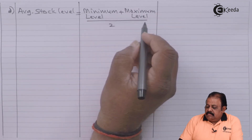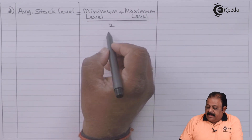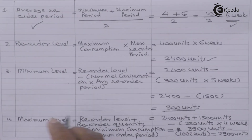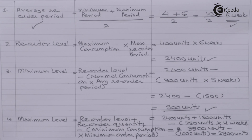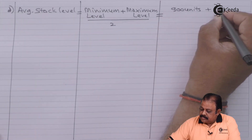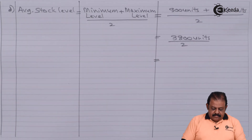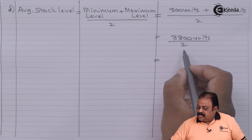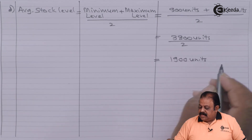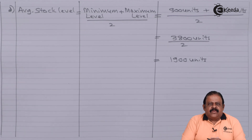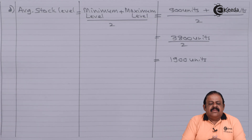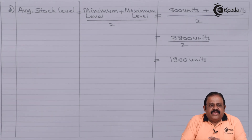Finally, average stock level equals minimum level plus maximum level divided by two. Minimum level is 900 units and maximum level is 2900 units — that is 3800 units divided by 2 — giving 1900 units. Thus we have calculated reorder level, minimum level, maximum level, and average stock level. Thanks for watching this video; stay in tune with Ikida and subscribe to our channel.